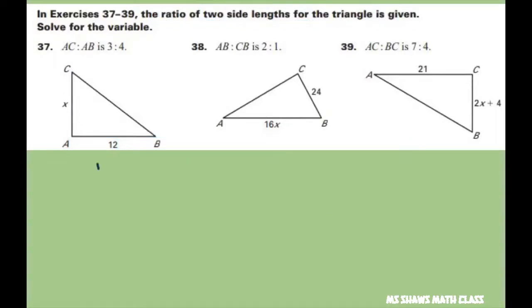We have AB to CB is 2 to 1. Well, AB here is 16X and CB is 24. Should be 16X should be on the top here and 24.